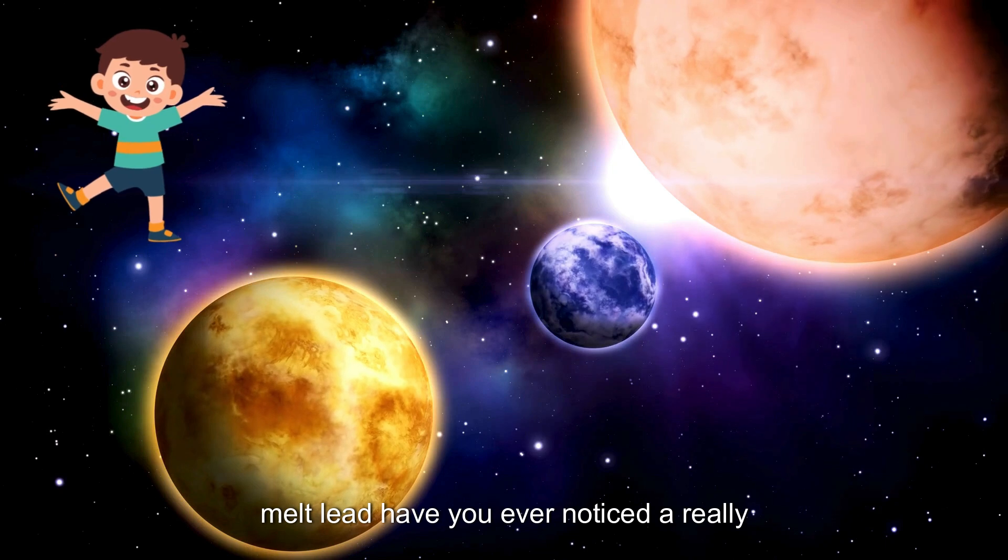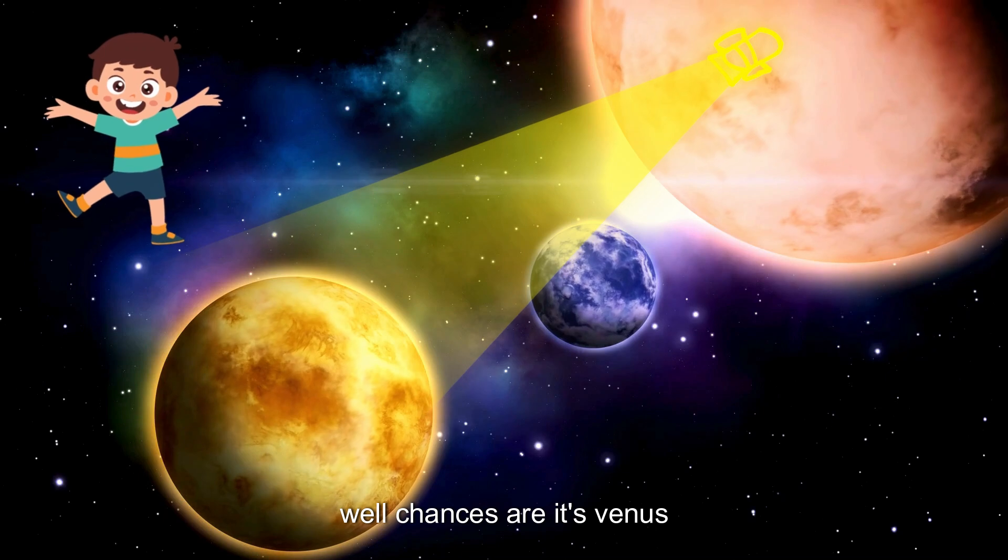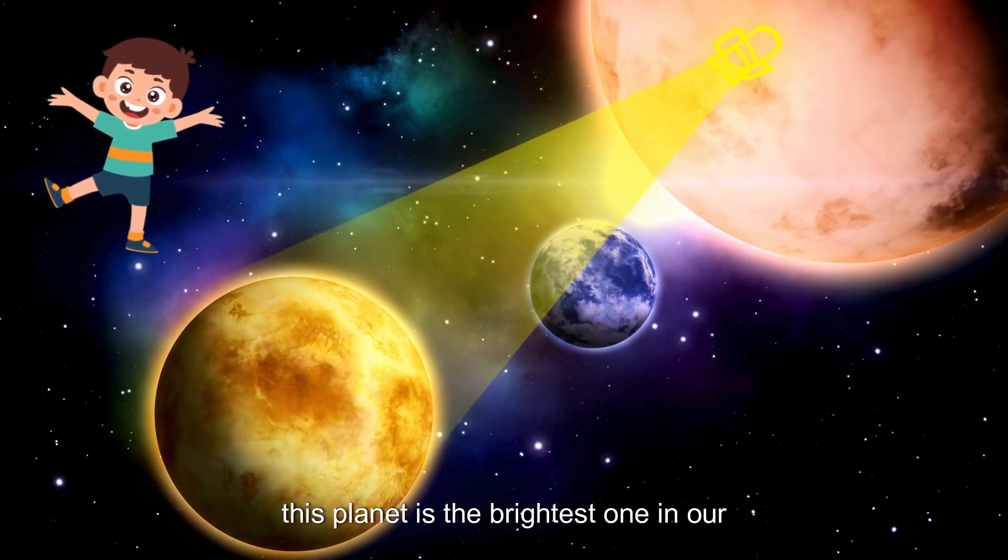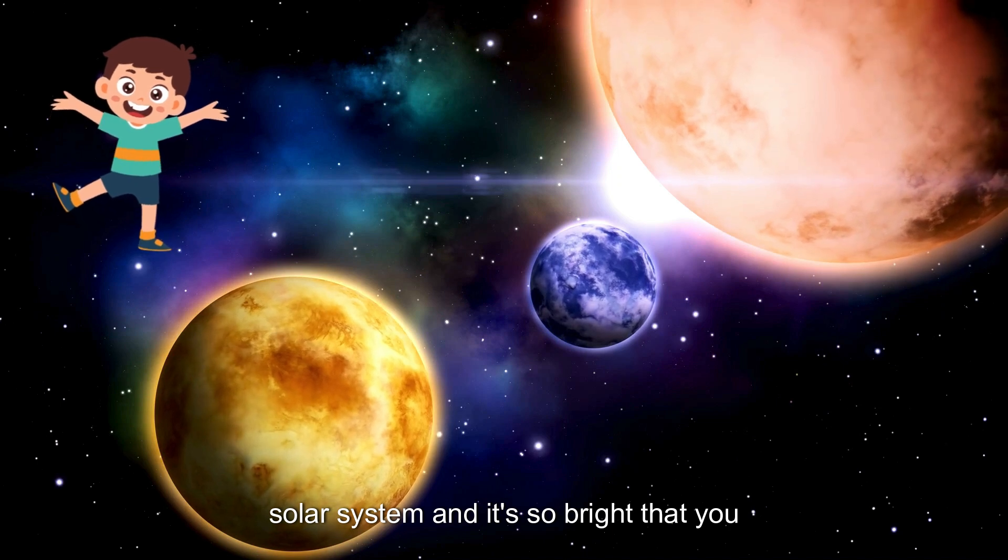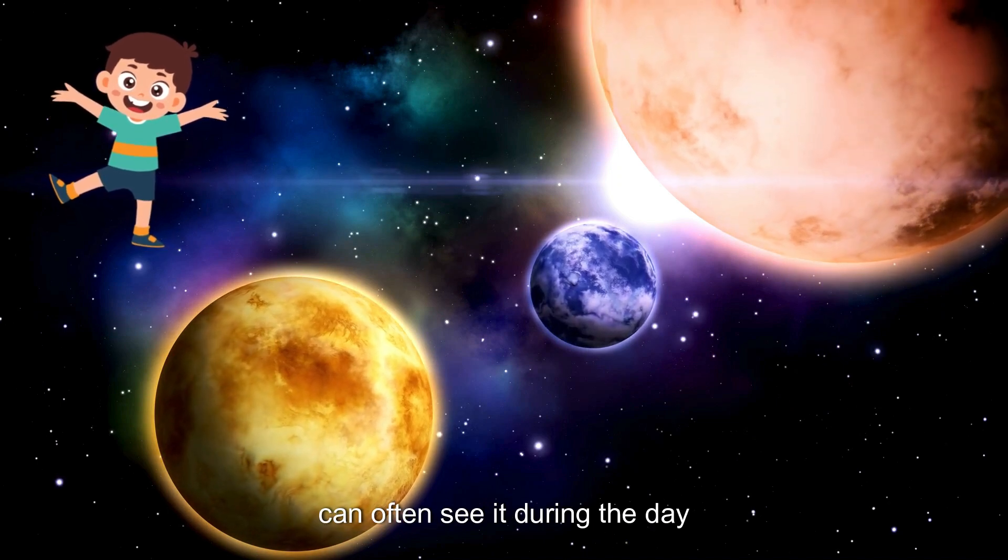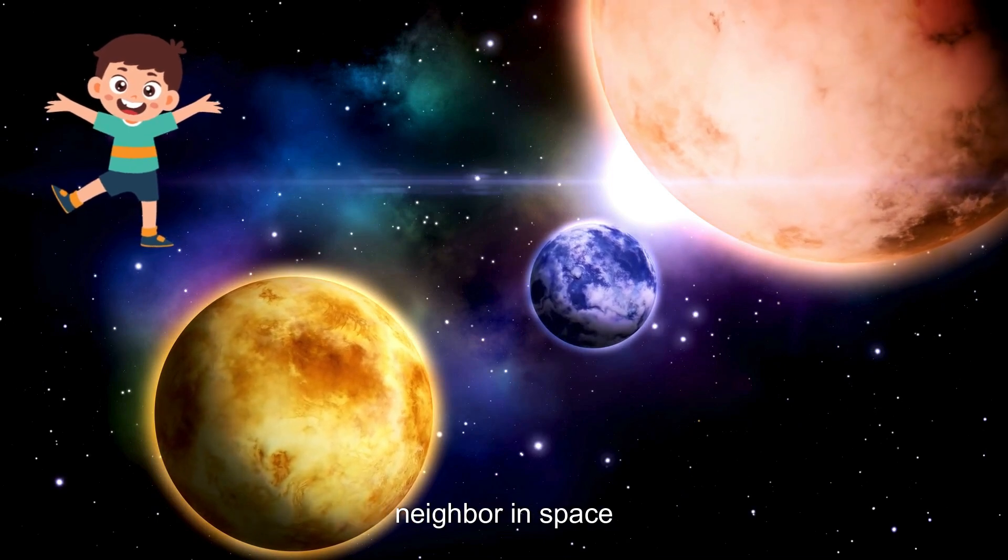Have you ever noticed a really bright object in the sky during the day? Well, chances are it's Venus. This planet is the brightest one in our solar system, and it's so bright that you can often see it during the day. So go ahead and wave hello to your friendly neighbor in space.